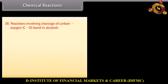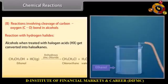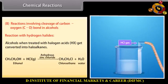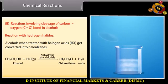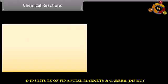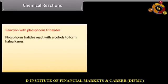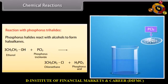Reactions involving cleavage of the carbon-oxygen bond in alcohols — reaction with hydrogen halides: alcohols when treated with halogen acids get converted into haloalkanes. When hydrochloric acid gas is passed through ethanol in the presence of anhydrous zinc chloride, it forms chloroethane and water. This reaction does not occur with phenols. Phosphorus halides also react with alcohols to form haloalkanes; phosphorus trichloride reacts with ethanol to form chloroethane and phosphorous acid.